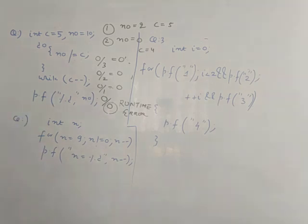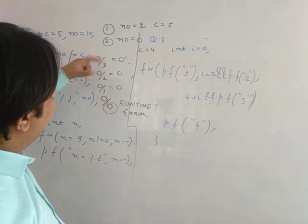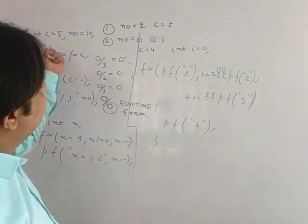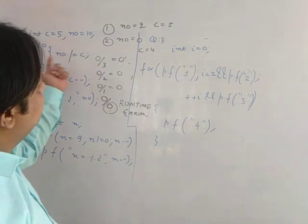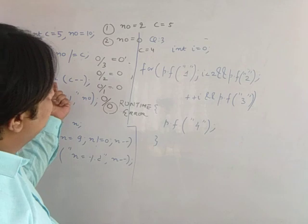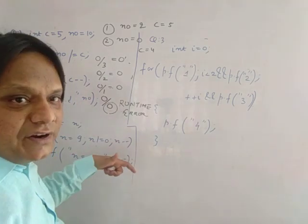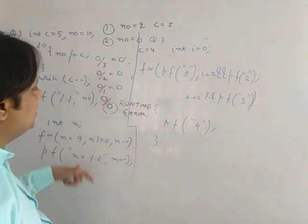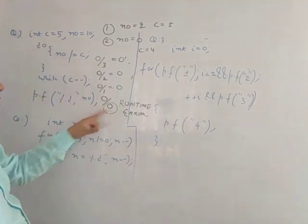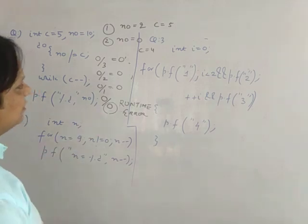The code will compile but after printing a couple of values it gives a runtime error. The output is: num = 2 when c is 5, num = 0 when c is 4, 0 when c is 3, 0 when c is 2, 0 when c is 1, and then dividing 0 by 0 causes a runtime error. We normally write 2,0,0,0,0 but forget we cannot divide by 0.